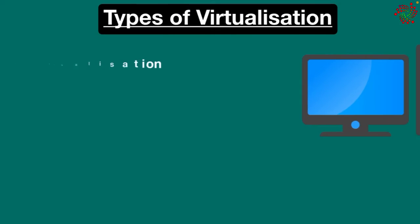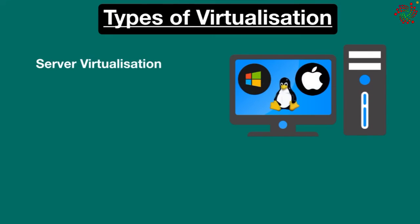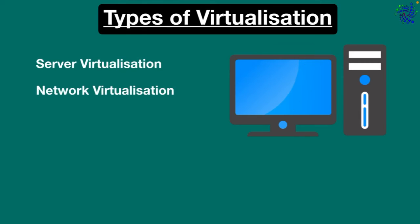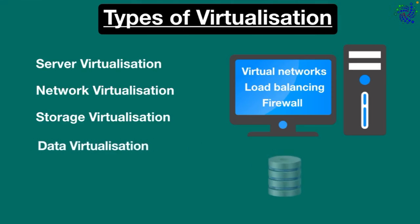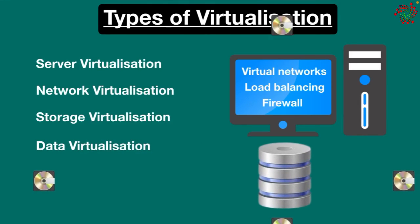Now let's talk about the common types of virtualization. Server virtualization enables multiple operating systems to run on a single physical server. Network virtualization is used to create virtual networks, load balancing, and firewall features. Storage virtualization combines multiple network storage devices into a single storage device where multiple users can access it.